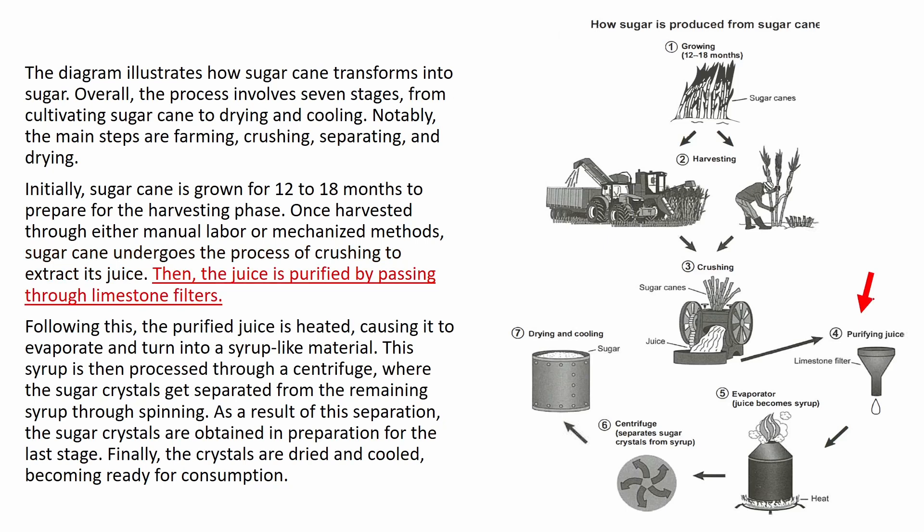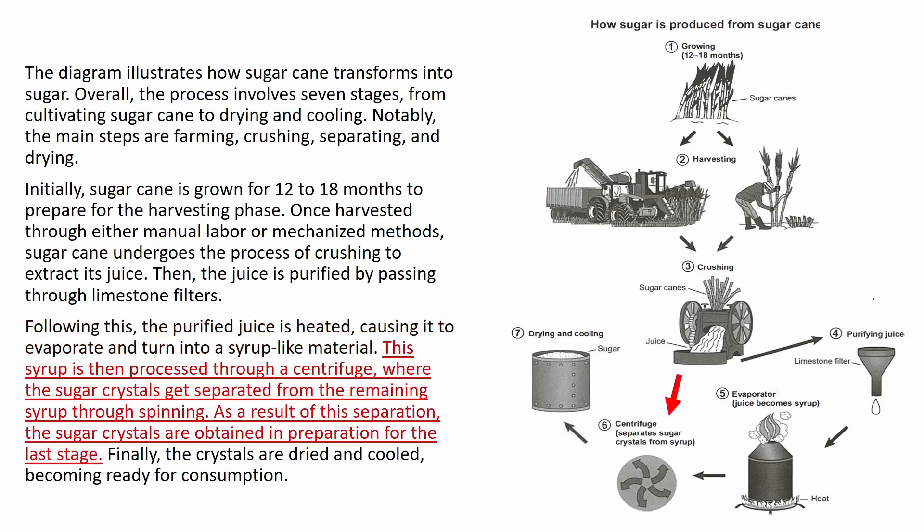'Then, the juice is purified by passing through limestone filters. Following this, the purified juice is heated, causing it to evaporate and turn into a syrup-like material. This syrup is then processed through a centrifuge, where the sugar crystals get separated from the remaining syrup through spinning.'